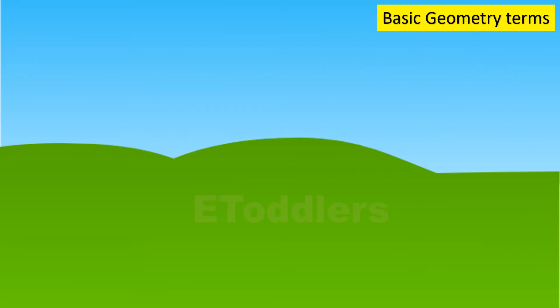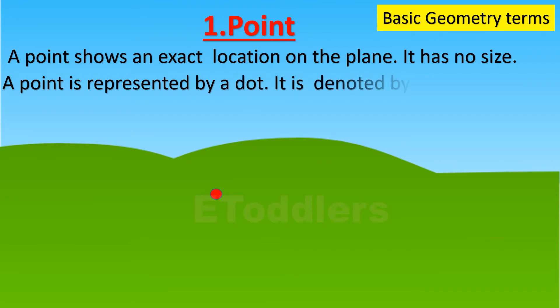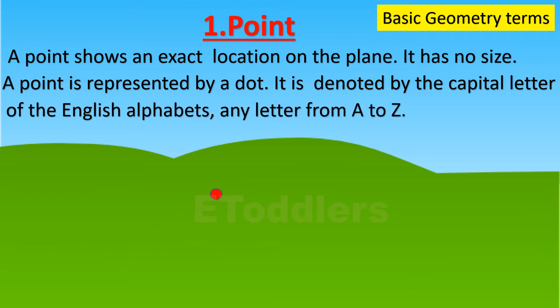The first term is point. A point shows an exact location on the plane. It has no size. A point is represented by a dot and is denoted by a capital letter of the English alphabet, any letter from A to Z. We call it point A.